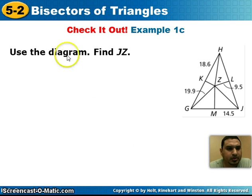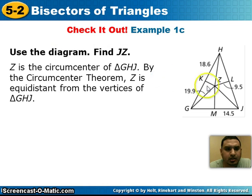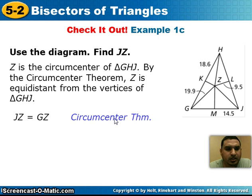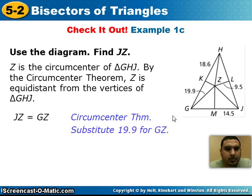Next example: use the diagram to find the distance from J to Z. Z is the circumcenter, which means the distance from J to Z equals the distance from G to Z. Substituting 19.9 for GZ, the distance from J to Z is also 19.9 units.